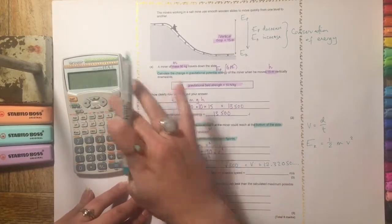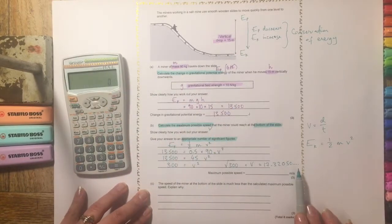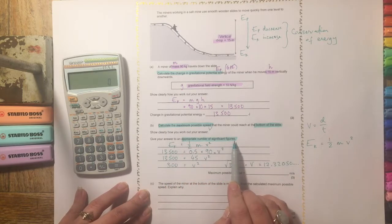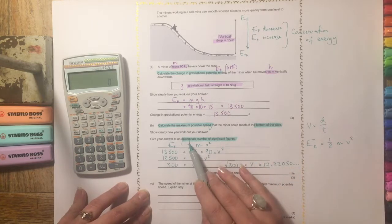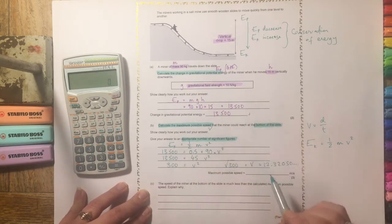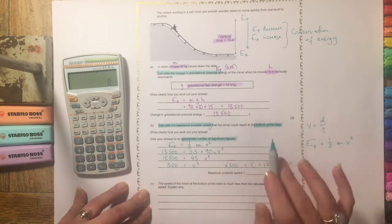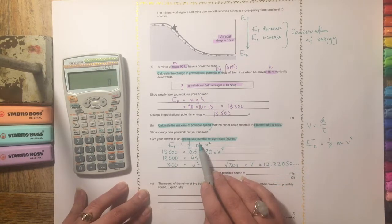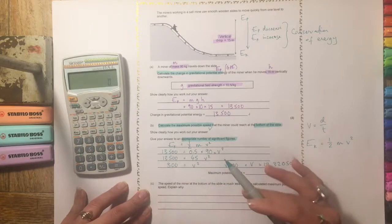Now the question hasn't asked us just to write this big long number. It's asked us to give it to an appropriate number of significant figures. So sometimes you will be told two significant figures, three significant figures. But knowing how many significant figures to give an answer to is part of the math skills that they want you to be able to demonstrate.